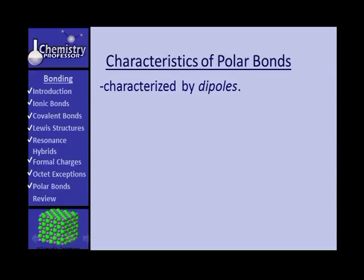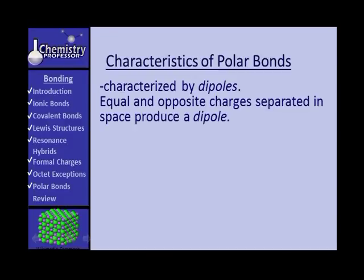Characteristics of polar bonds. They are characterized by the presence of dipoles. Dipoles are equal and opposite charges separated in space. And when you have equal and opposite charges separated in space, you have something we call the dipole. Let me show you.